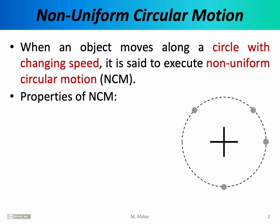Non-uniform circular motion has some important properties that we must understand. In this picture I'm depicting the motion of an object executing non-uniform circular motion. The object could be a car driving around a circular track as it speeds up or slows down, or it could be a satellite orbiting a planet with a changing speed. Each dot represents the position of the object at a fixed time interval. As you can see, the distance traveled between the dots is increasing, so the speed of the object must be increasing.